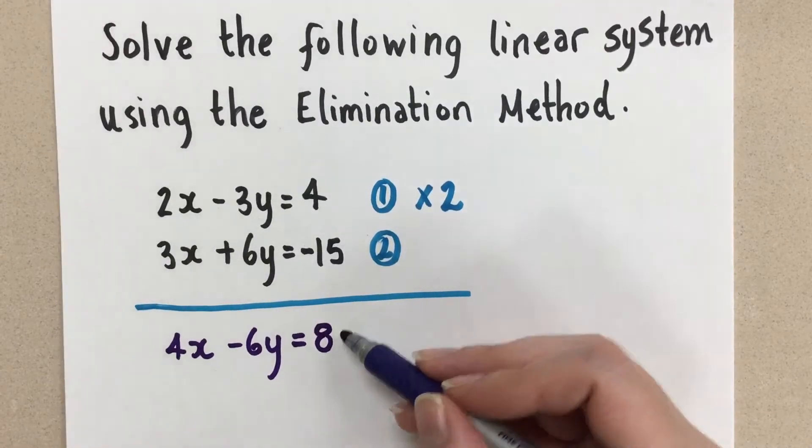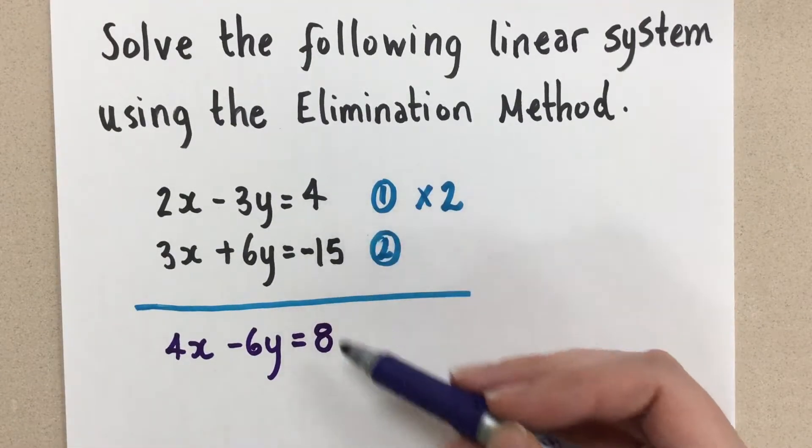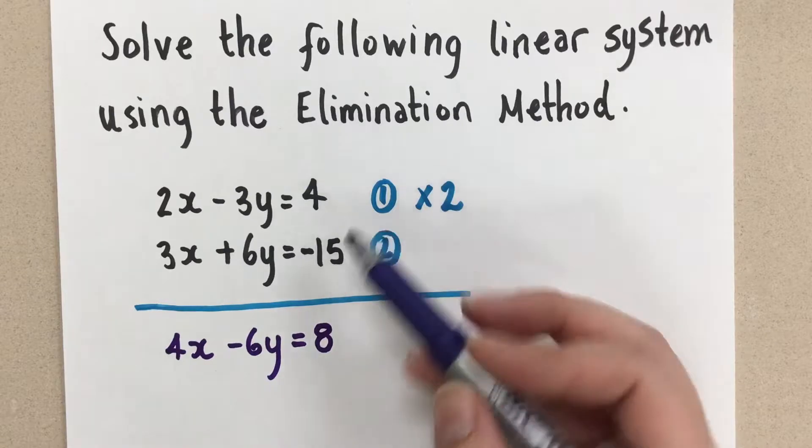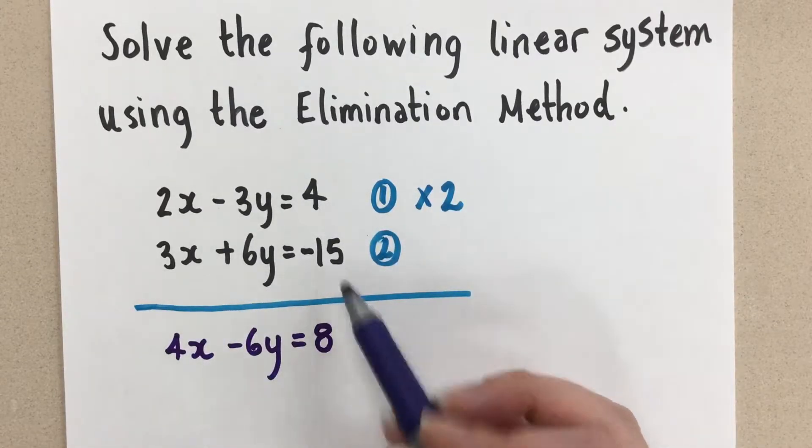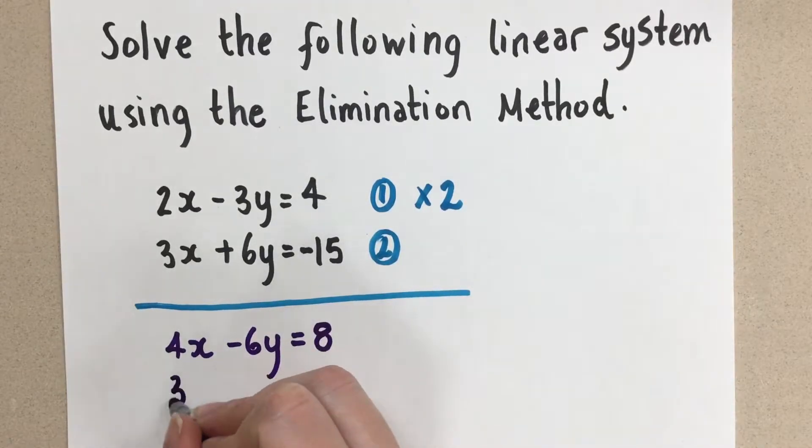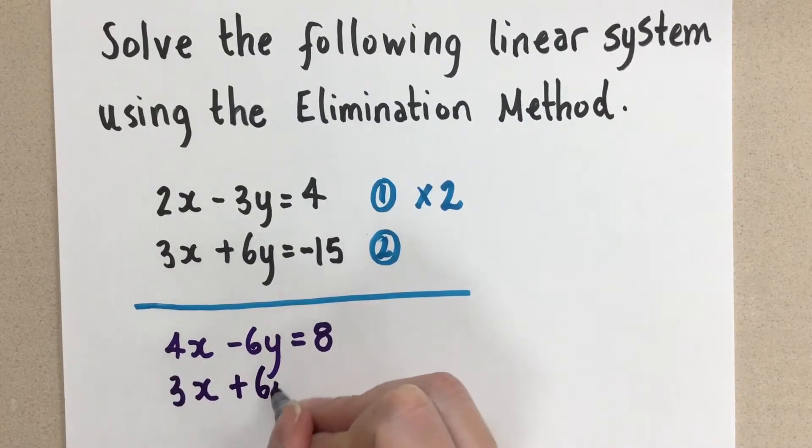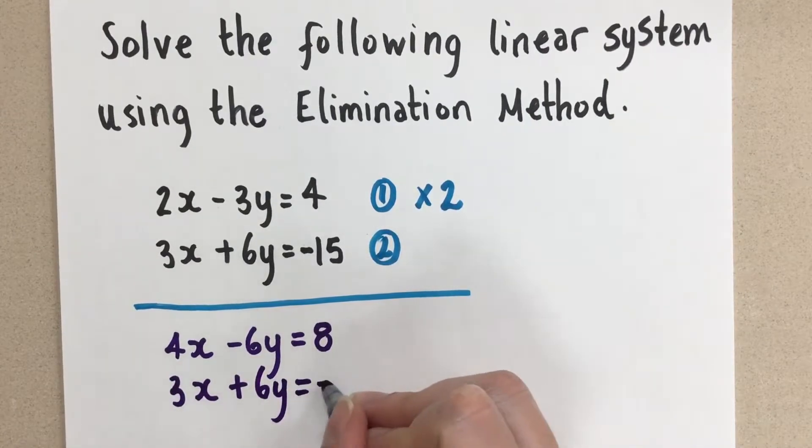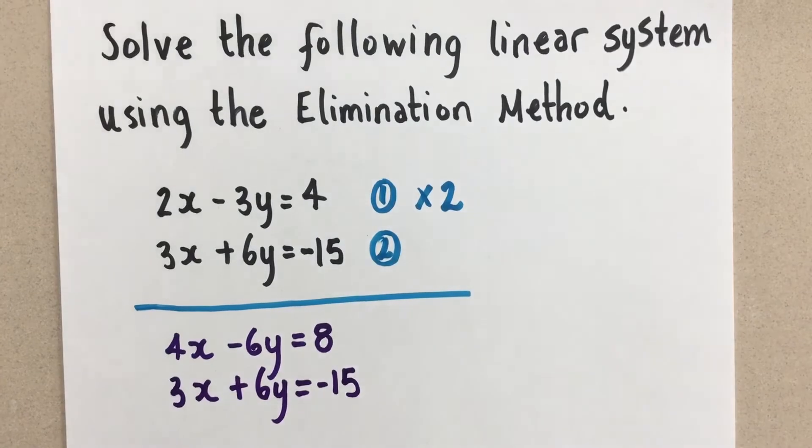and we get 8. So that's the new equation. It's just a multiple of the original, so it is the same equation. And I'm going to keep my second equation the same. So let's write it directly underneath. Make sure they're in nice columns. Like this.